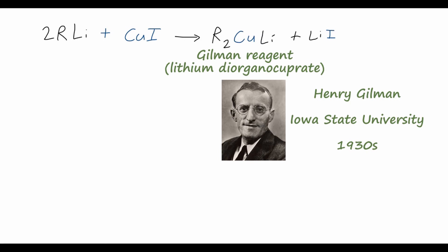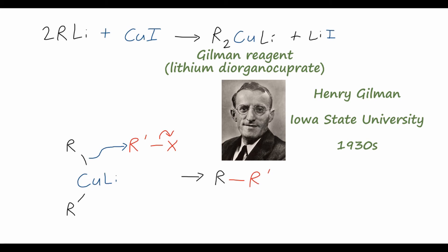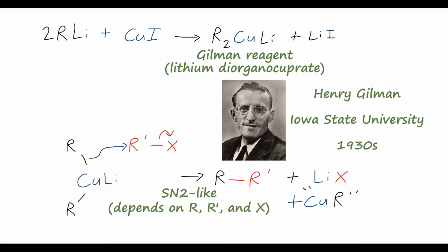The Gilman reagent is what participates in the cross coupling. We have this copper species with lithium and our two R groups, and also our pseudohalide or halide. The bond to the R group swings over to attack the R' group, and the halide falls off, giving us the cross-coupled RR' product, the lithium halide salt, and the ill-defined copper-R species. This is an SN2-like reaction with backside attack, though it is not exactly SN2 — depending on the identity of the halide or groups, the coupling might involve inversion of stereochemistry, racemization, or similar outcomes.